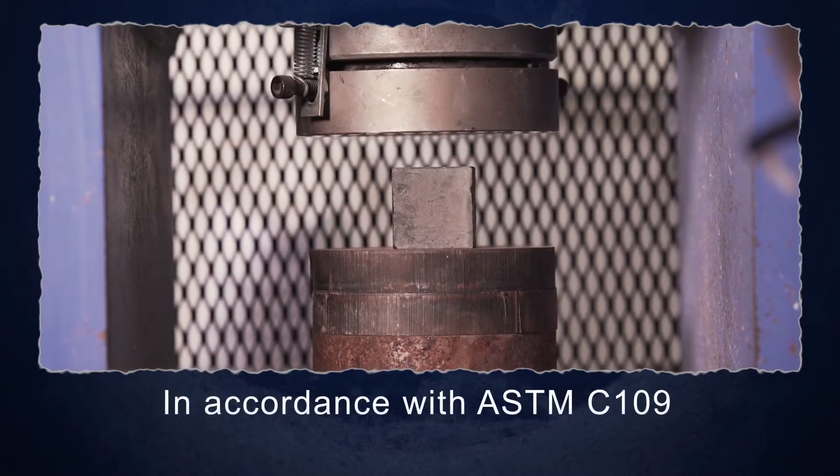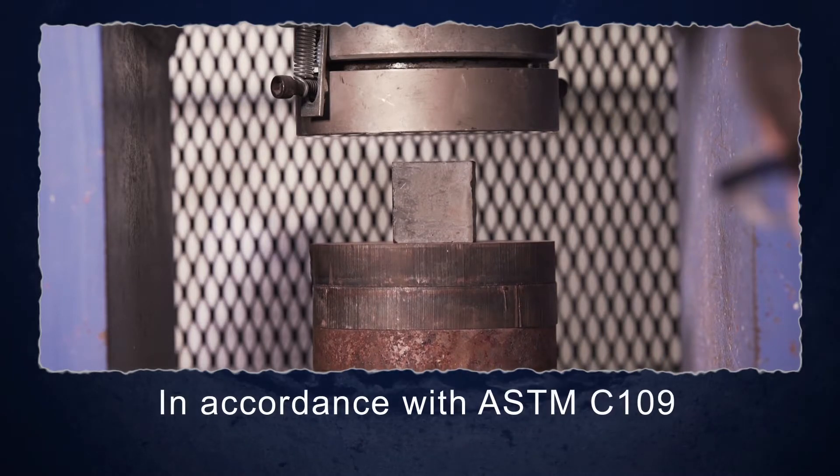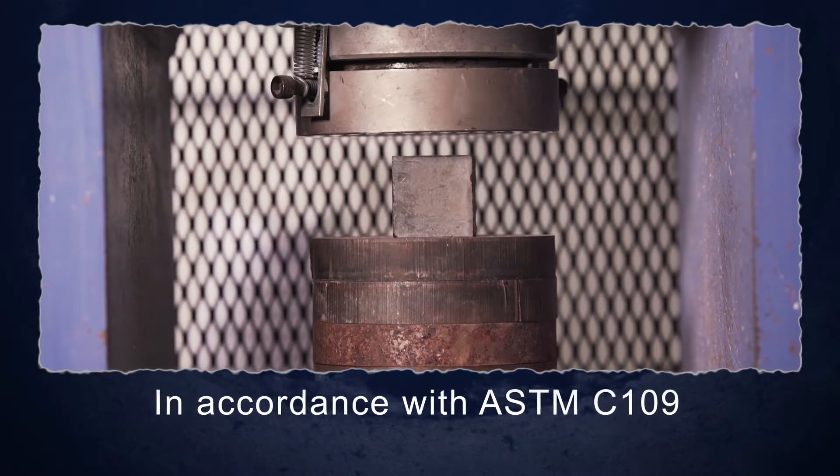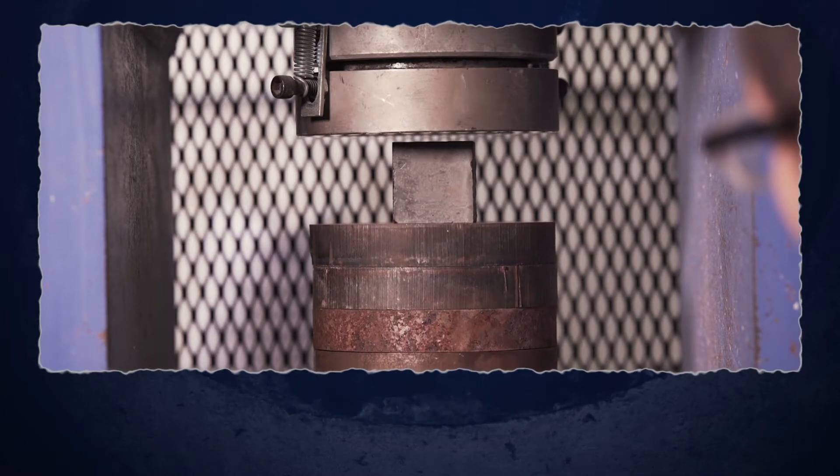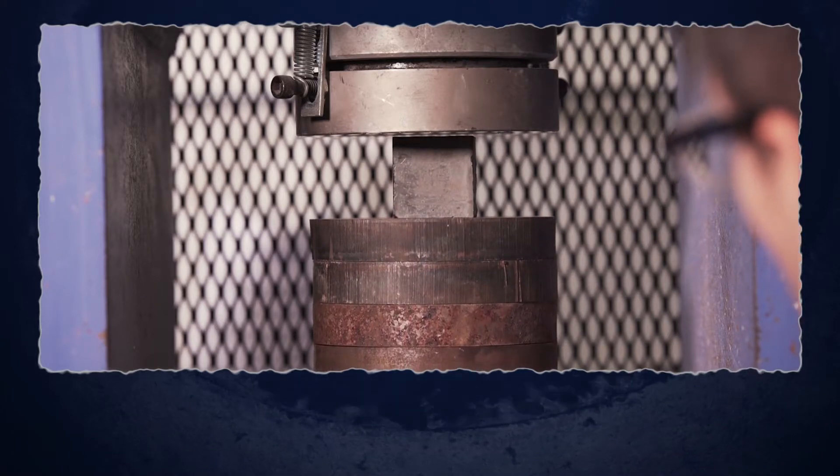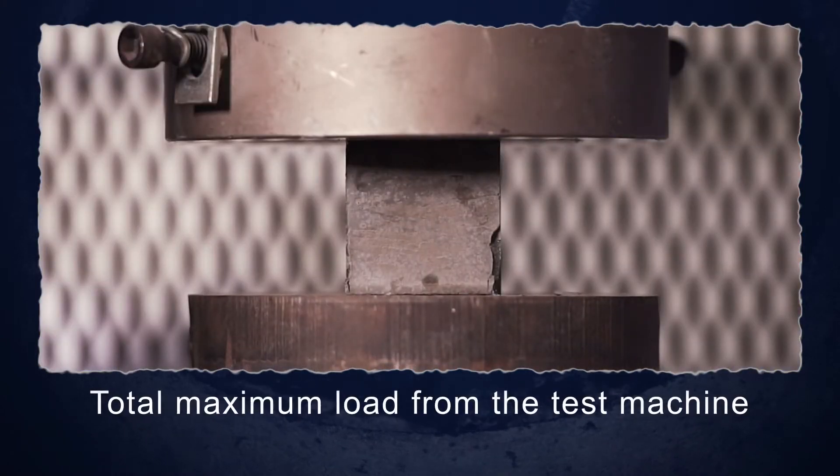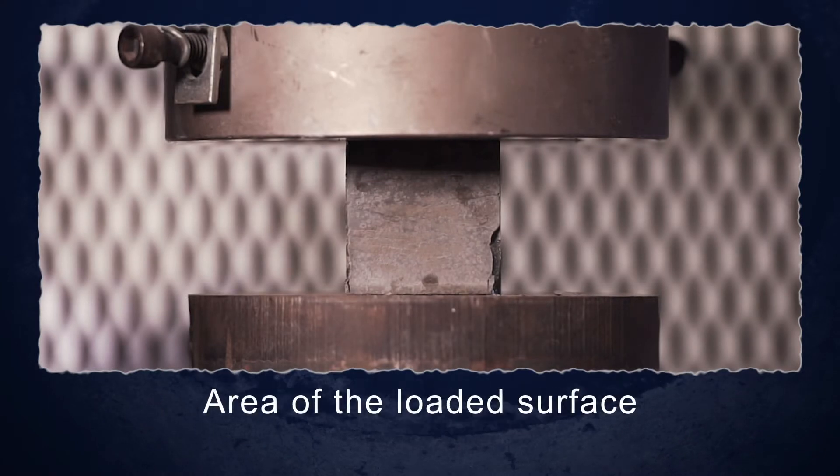Utilize procedures and load rates in accordance with ASTM C109 to load test the cubes to failure. Compressive strength is determined by dividing the total maximum load from the test machine by the area of the loaded surface.